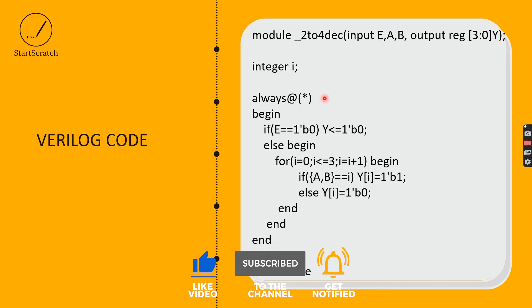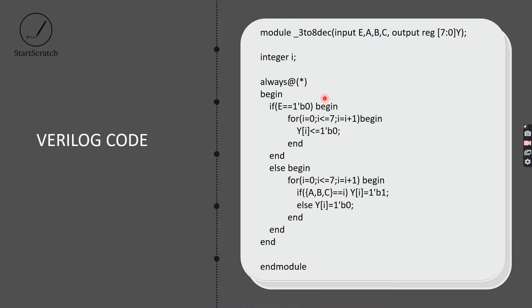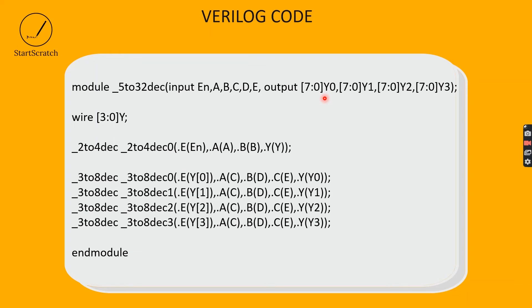Here is the 2-to-4 decoder which I explained in my previous videos, and here is the 3-to-8 decoder. And here is my 5-to-32 decoder. The module name is underscore_5to32_dec. Here are the input port lists — 1-bit binary numbers — and here is my output — 8-bit binary numbers. If you observe, there is a wire Y which is 4-bit: Y[0], Y[1], Y[2], Y[3]. These are the 4 wires.